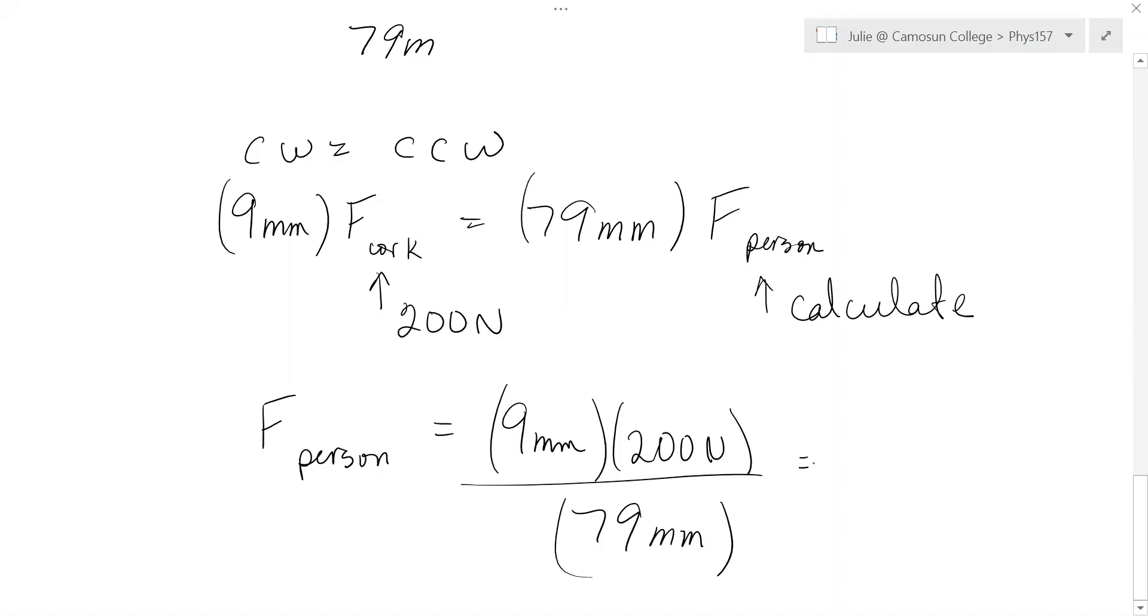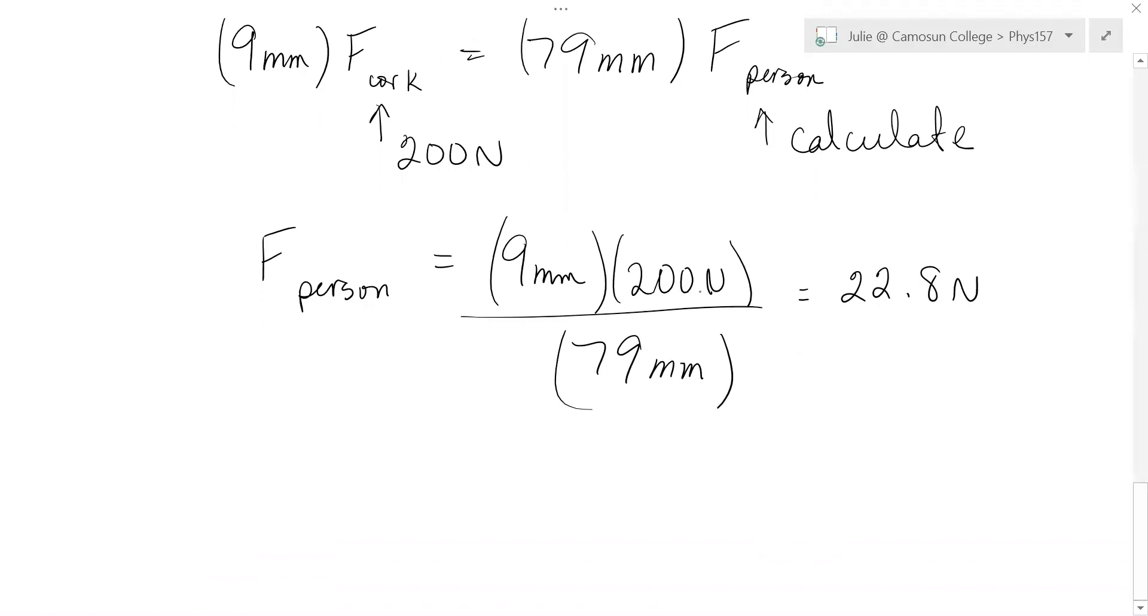And so that would equal 22.8 newtons. So we'll say 22.8 newtons. So that's nothing at all. That's not very much force at all. You do have to make sure you hold the bottle down though, or the whole thing will come flying off the table. So that's for 200 newton force. If you put in 400 newtons, then of course you increase that to about 45.6 newtons. So that's number two.